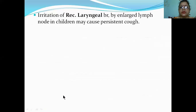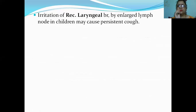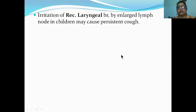Irritation of the recurrent laryngeal branch by enlarged lymph nodes in children - such as adenoids below 5-6 years of age - may cause persistent cough. If the recurrent laryngeal branch is pressed by enlarged lymph nodes in that area, the child will have persistent cough.